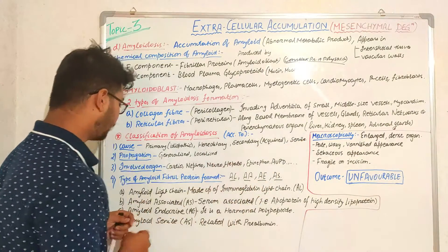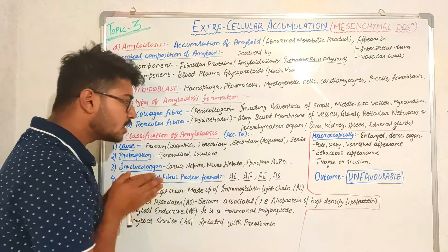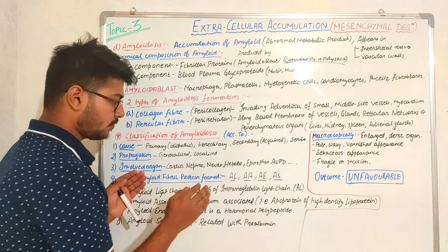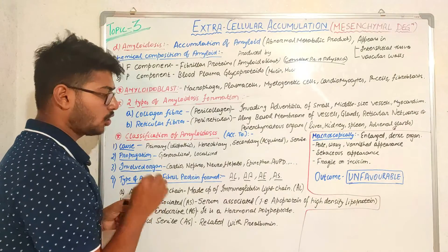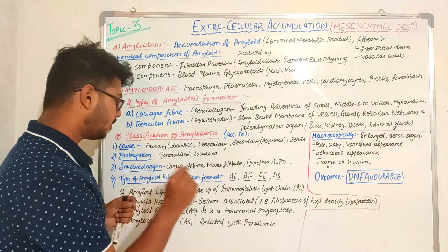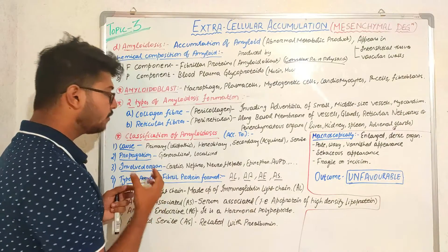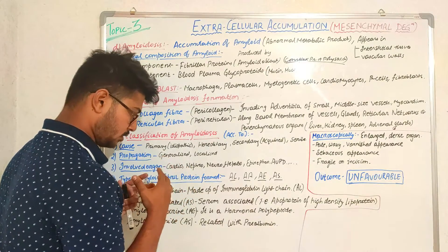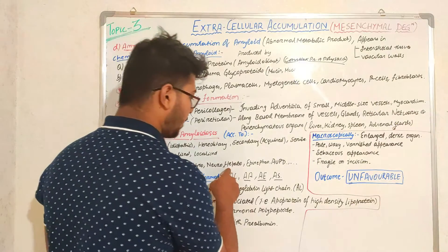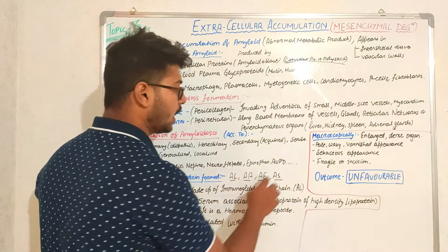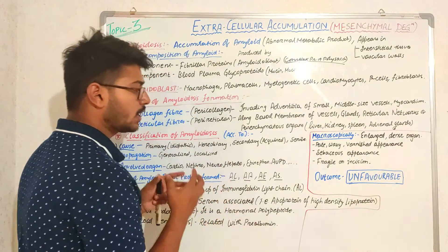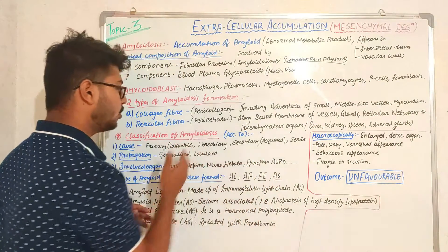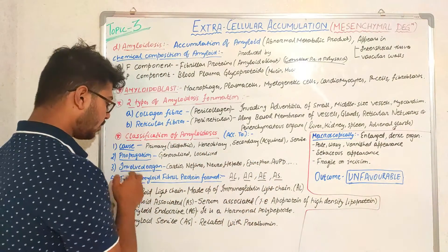According to propagation, amyloidosis can be generalized — occurring over the whole body — or localized in a specific location. The organs involved include: cardio (heart), nephropathy (kidney), neuro (central nervous system), hepatoma (liver), epinephro (adrenal gland), and APUD — a special type of endocrine cells that produce polypeptide hormones — if affected with amyloidosis.